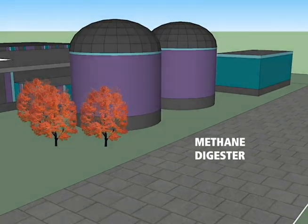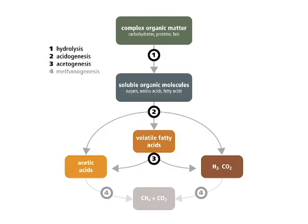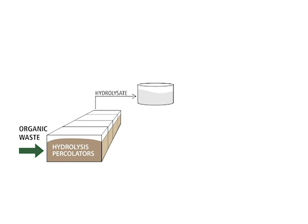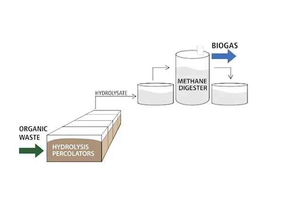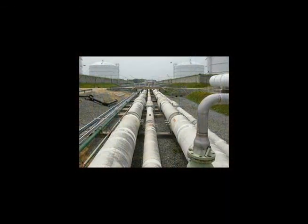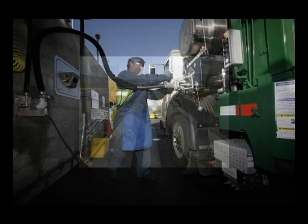This is the second stage of the process, or the methanation stage. In the methane digester, trillions of naturally occurring methanogenic bacteria consume the organic content of the hydrolysate and produce biogas. Biogas can be used to fuel an engine generator for creating renewable electricity and heat, upgraded for injection into a natural gas pipeline, or compressed into vehicle fuel or CNG.